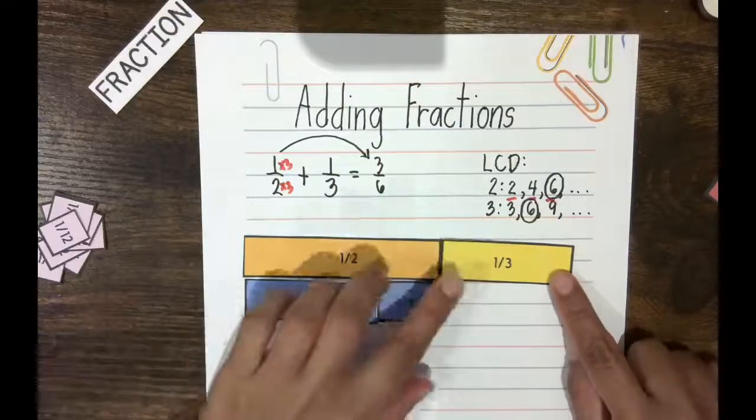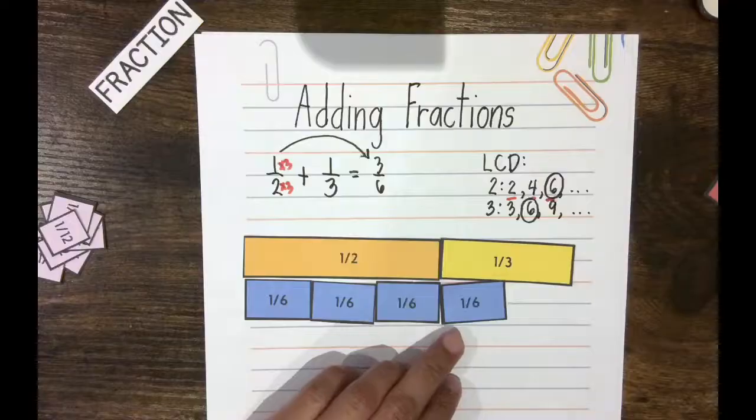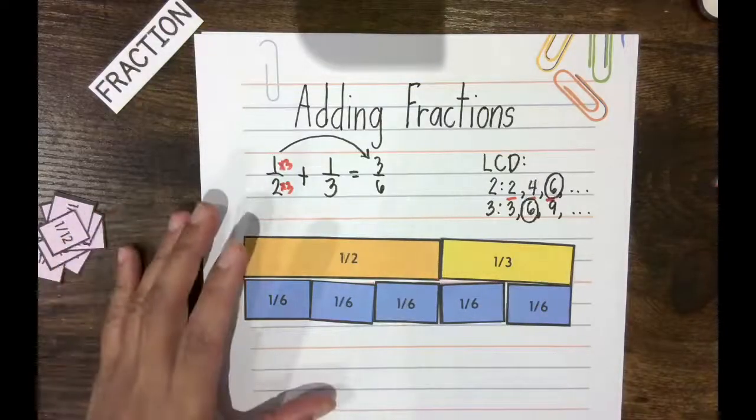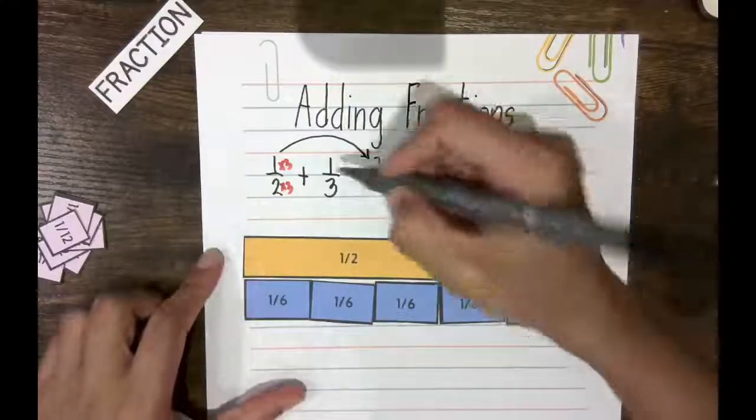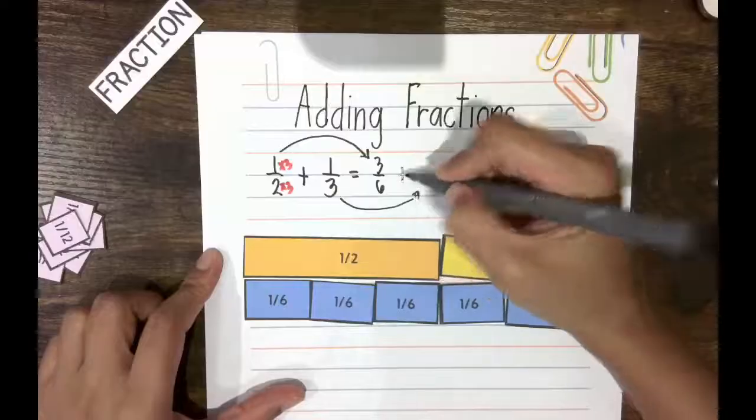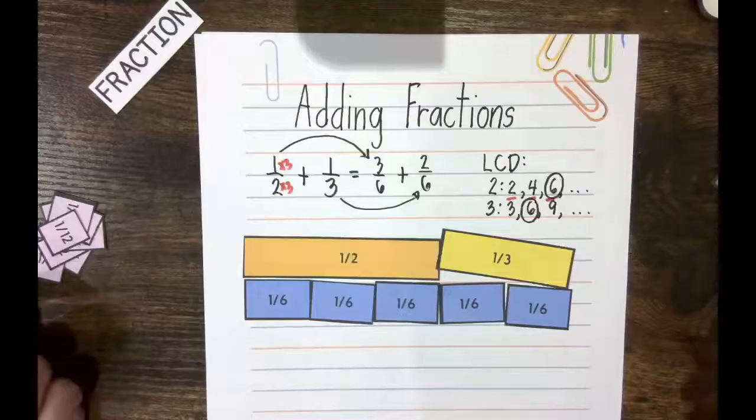And then, I can express 1/3 as sets of 1/6 also. And I need 2 of those to make 1/3. So that means, 1/3 is the same thing as 2/6. 2 pieces of 1/6 means 2/6.